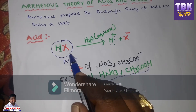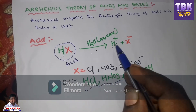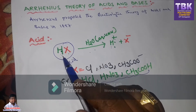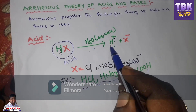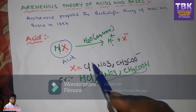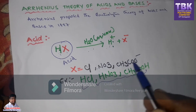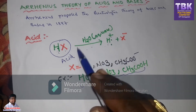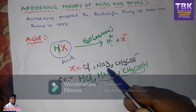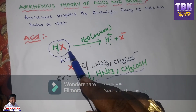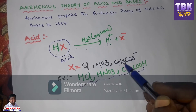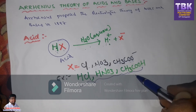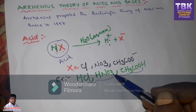The general formula of the acid is HX. The chemical substance which produces H+ ions in aqueous solution is called an acid. It should have H, and that H ionizes in water to produce H+ ions. X is a variable — if you substitute X equal to Cl, that is HCl; X equal to NO3 is HNO3; X equal to CH3COO minus gives CH3COOH, which is acetic acid. These are the examples for acids.